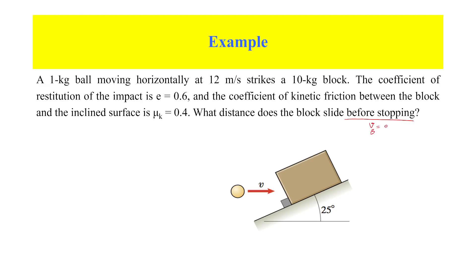As you can see, the final velocity of the block is zero. The first step for solving this problem is to analyze the impact between the ball and the block. When the block is moving along the incline surface, we have to resolve the velocity of the ball along the incline surface. This is the only component we are using, so we can say the type of impact between the ball and the block is a central impact.